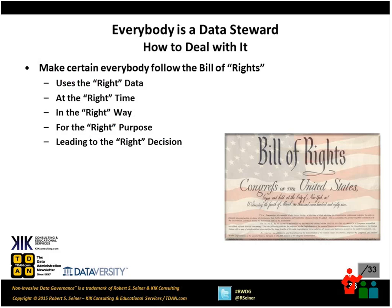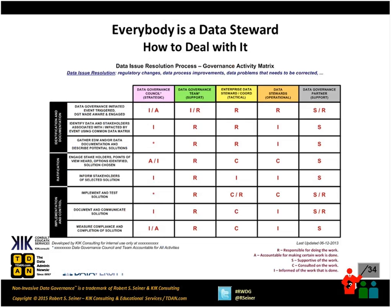Another way to deal with this is to make certain everybody follows what I call the Bill of Rights — not a Bill of Rights as in the rights of the data stewards, but a play on words where we want people to use the right data at the right time, in the right way, for the right purpose, and most often that's going to lead to a right decision. Isn't that what governance is all about — getting the appropriate people involved at the appropriate time and then executing and enforcing authority over the management of data? One way to apply stewards to activities is to create a RACI chart — a governance activity matrix.